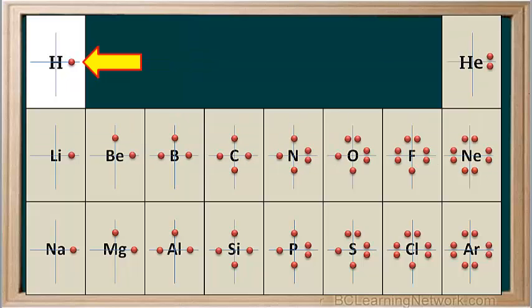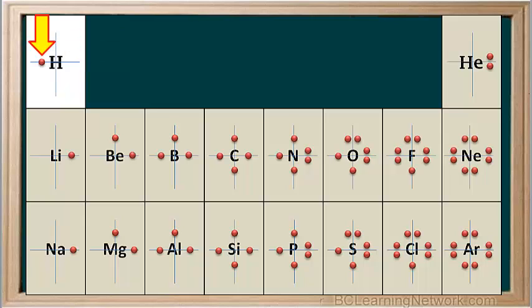Hydrogen, which is in group 1 and has one valence electron, has the same Lewis diagram as lithium, sodium, and the other elements in group 1. This single electron could be on any of the lines around the hydrogen atom — on the right, on top, on the left side, or on the bottom. All of these positions for the valence electron are valid.